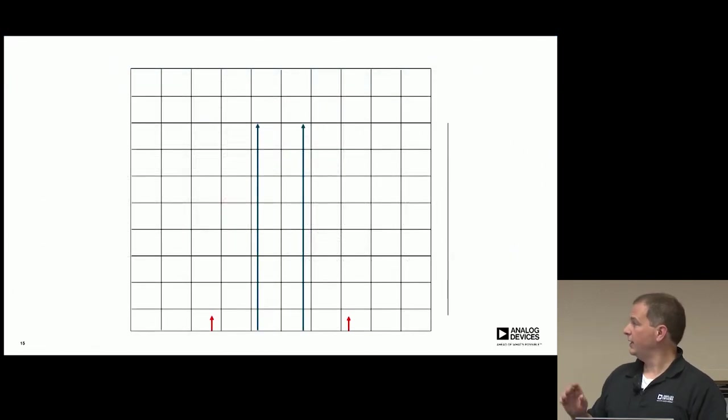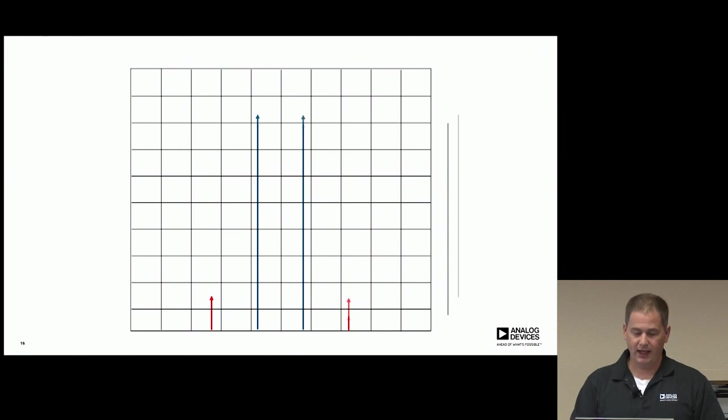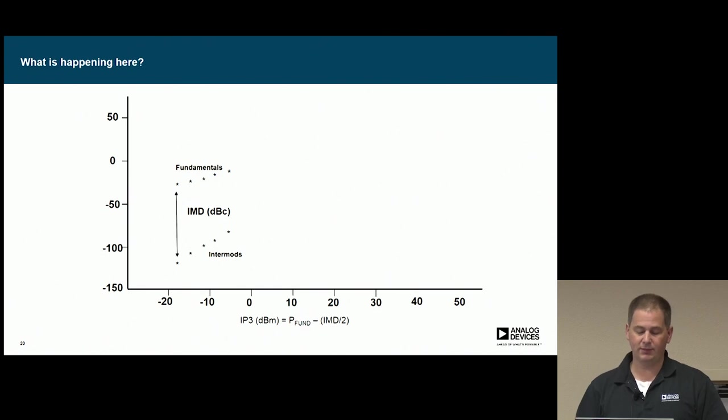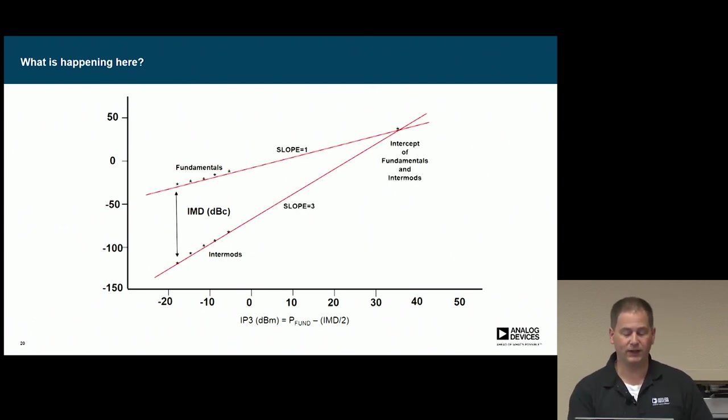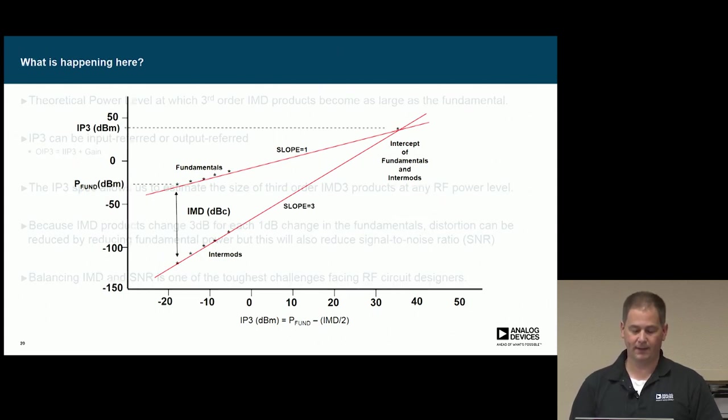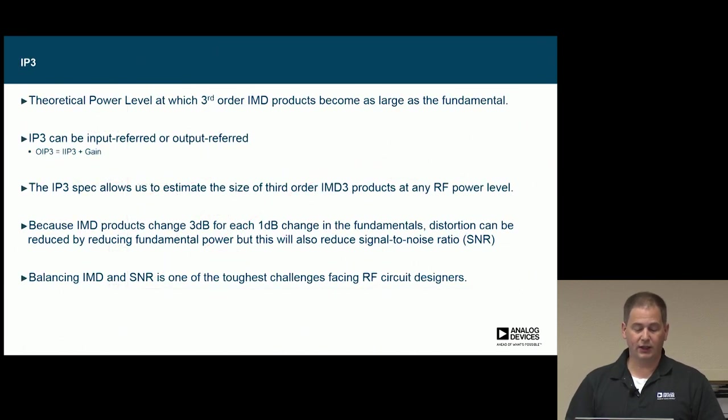Just a flipbook animation. If we think of our two fundamentals and our IMD products down at the bottom, as our fundamental goes up, we can see that the distortion products actually go up higher. If we plot that out based on IP3 versus output power, we can see the fundamental and the intermods. We can plot a best fit line of a slope of one and a slope of three. And then we intercept that, and that's what's known as our IP3 number, which is the intercept of the fundamental and intermods. The intermod products change at 3 dB for every 1 dB of change in the fundamental.